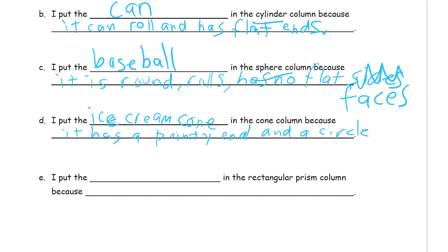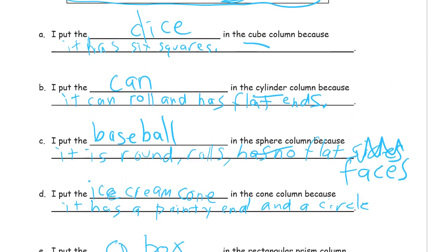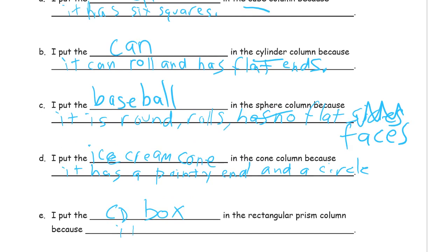And now the rectangular prism, that was a CD case or box in the rectangular prism column because it has just like the cube, it has a top and a bottom, a front and a back, and a left and a right, so it has six, oops, it has six, but it doesn't have six square faces, it has six rectangles, six rectangle faces.